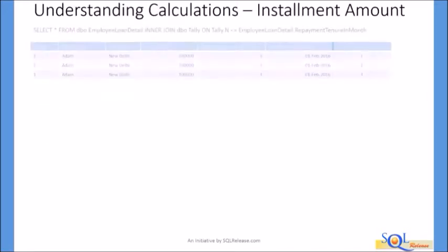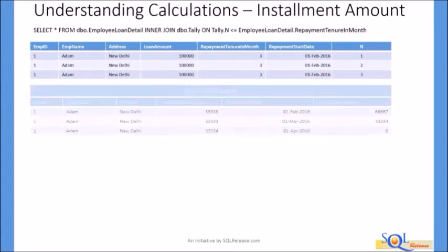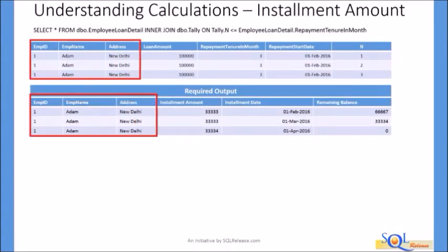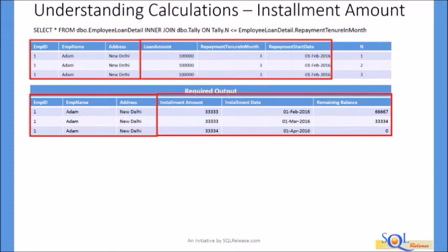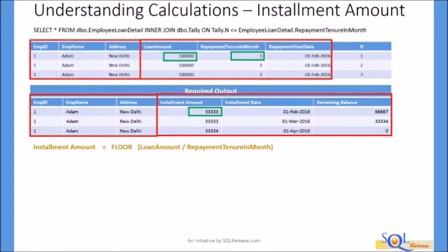This is the query and its result set. Now we need to generate the required output. EMP ID, EMP Name, and Address columns have been generated already. However, installment amount, installment date, and remaining balance columns still need to be calculated from the loan amount, repayment tenure in month, and repayment start date columns. To get the installment amount, we divide the loan amount by repayment tenure in month and extract the integer part using the FLOOR function, which returns the largest integer from a numeric value in T-SQL. This calculation applies to all rows except the last installment.